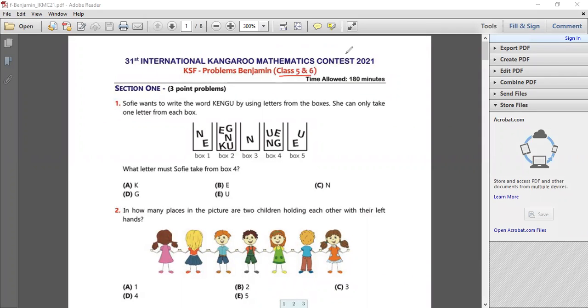We are going to solve year 2021, so let's begin. Question number one: Sufi wants to write the word Kangaroo by using letters from these boxes. She can only take one letter from each box. What letter must Sufi take from box four?